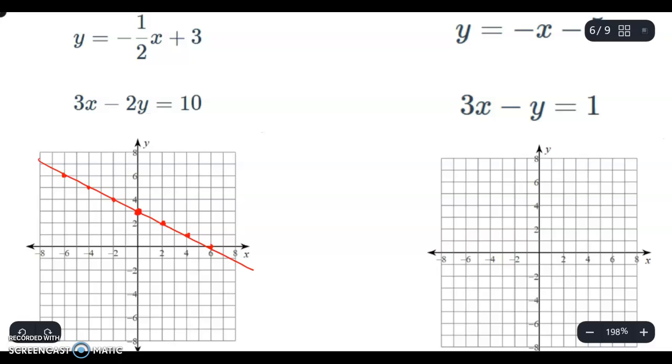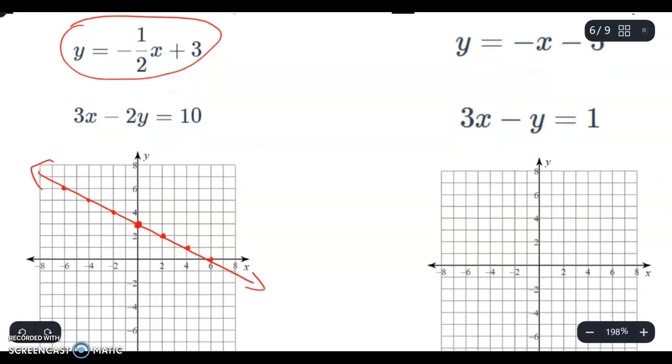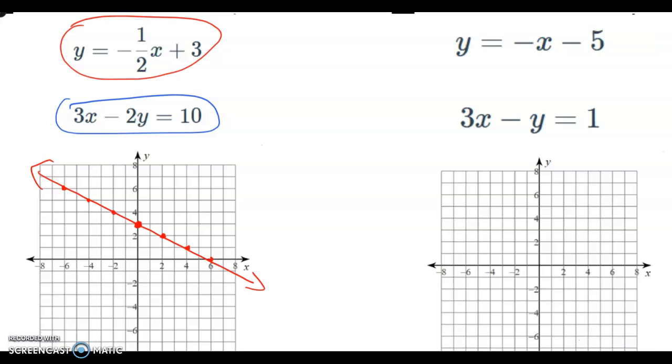So that's the line for y equals -1/2x plus 3. Now I'm going to do this one but as you can see it's not as easy to graph because it's not in slope intercept form so I'm going to rewrite it over here and put it in slope intercept form.